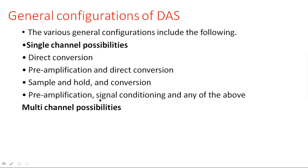Looking at the single channel possibilities: the first is direct conversion, meaning whatever data we are collecting will be converted into digital data and processed further. Another one is pre-amplification followed by direct conversion — the received data is amplified first, because the received data may have a low value that has to be amplified before applying it to the converter.